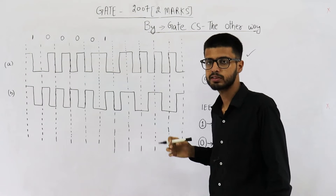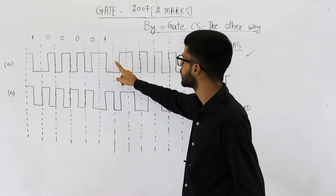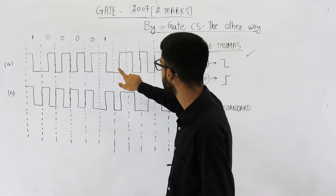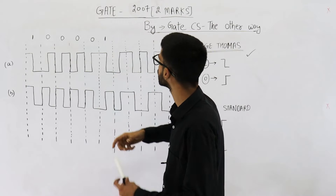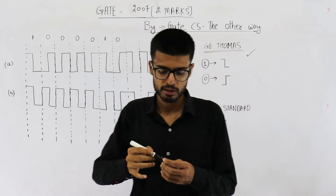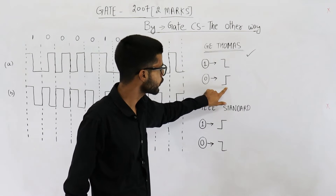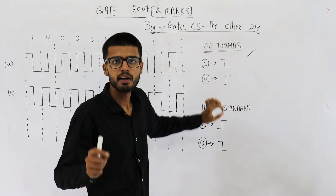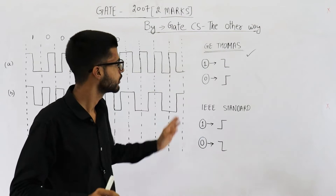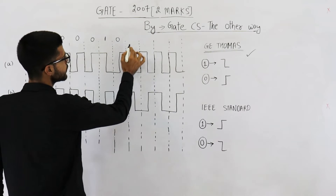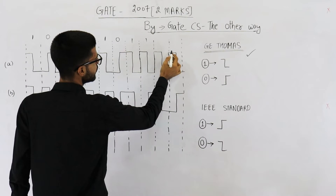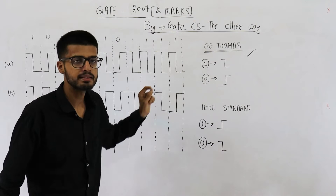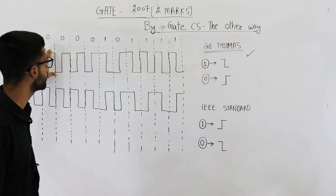Some of you might have noticed: whatever the value of the signal is at the start of the clock cycle, that is the bit we are representing. Here the value in this clock cycle is 0, so it will be 0. In the GE Thomas standard, if you want to represent 0, you begin from low voltage and go to high voltage. If you want to represent 1, you begin from high voltage and transition to low at the midpoint. So where the voltage is high, it's 1. Applying this, we get the bit pattern. This is the data encoded to produce waveform A in the Manchester encoding scheme.